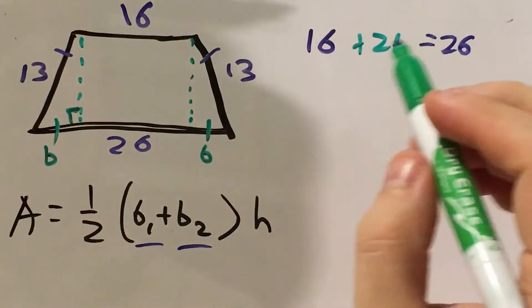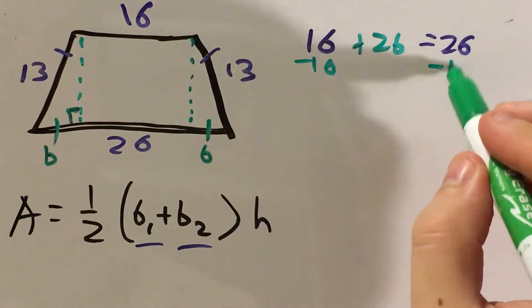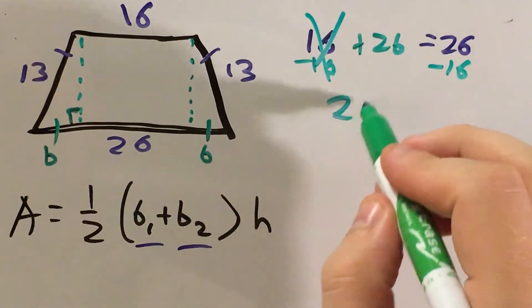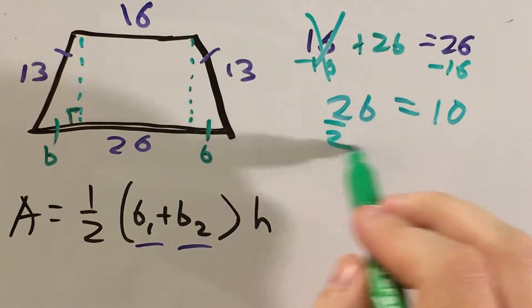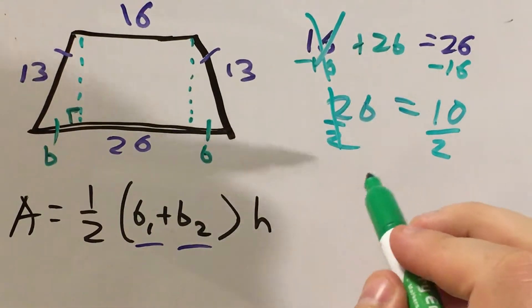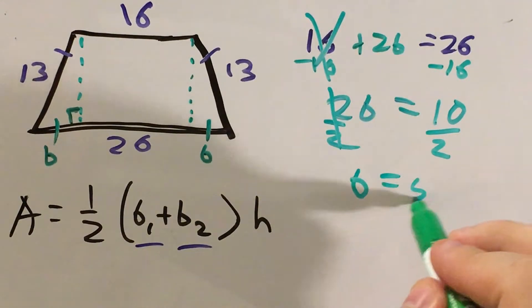So let's see. Subtract 16 from both sides. 16 minus 16 cancels. 26 minus 16 is 10. Now I divide by 2. 2 divided by 2 cancels. 10 divided by 2 gives me a length of 5.